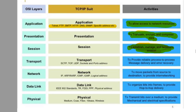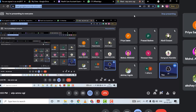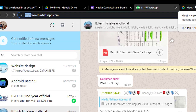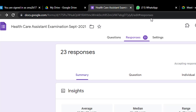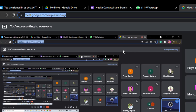The Session layer establishes, manages, and terminates sessions — like I am establishing a session for this lecture from 1:32 to 2:30. Transport layer is used to provide reliable process-to-process message delivery. Transport layer works on process-to-process communication — for example, WhatsApp, Google Meet, and Drive are all open on my system as different processes.